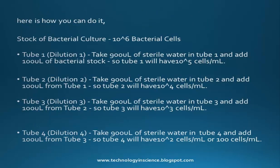Starting with a stock of 10^6 cells per ml: for tube 1, add 100 µl of stock to 900 µl of sterile water — tube 1 has 10^5 cells per ml. For tube 2, add 100 µl from tube 1 to 900 µl of sterile water — tube 2 has 10^4 cells per ml. For tube 3, add 100 µl from tube 2 to 900 µl of sterile water — tube 3 has 10^3 cells per ml. For tube 4, add 100 µl from tube 3 to 900 µl of sterile water — tube 4 has 10^2 cells per ml, or 100 cells per ml.